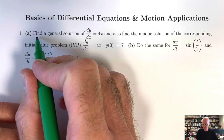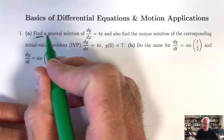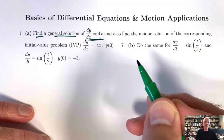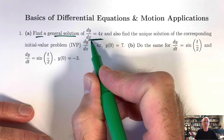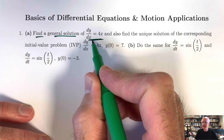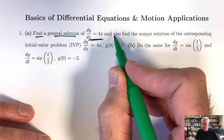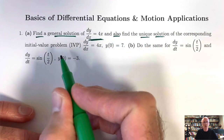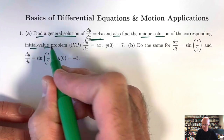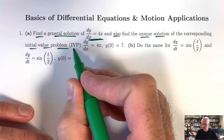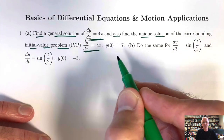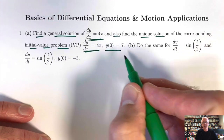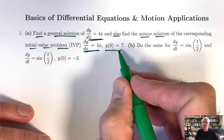Number one says in part A, first find what's called a general solution of this differential equation. When you look at that equation, it says dy/dx equals 4x. We're also going to find a unique solution of what's called the corresponding initial value problem, or IVP for short, where not only do we have the differential equation dy/dx equals 4x, we also have what's called an initial condition.